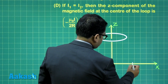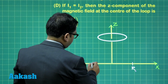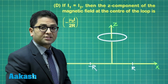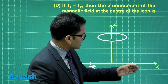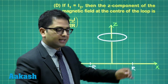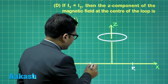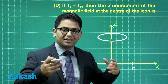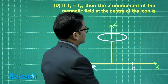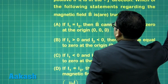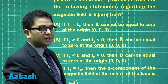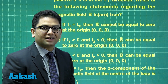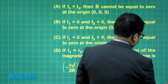At x equals to plus r and x equals to minus r, a current of i1 and i2 has been kept — infinitely long wires partially outside and partially inside, because they are along the y-axis. So these are the two wires kept at x equals to plus r and minus r. The question is not difficult, but it requires a bit of permutation and combination. For option A: if i1 equals i2, the magnetic field B cannot be equal to zero at the origin.